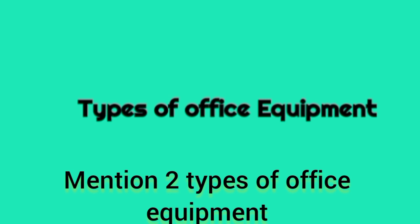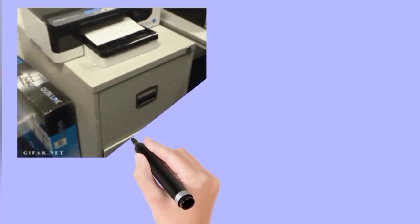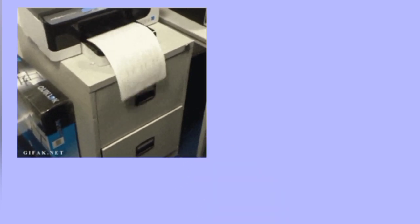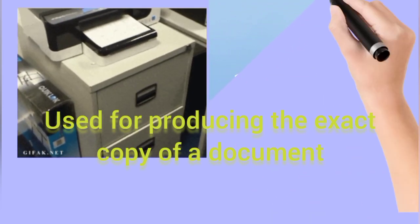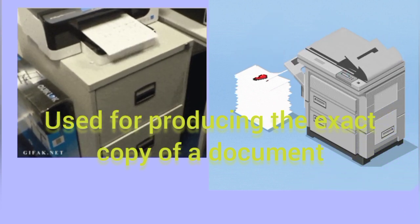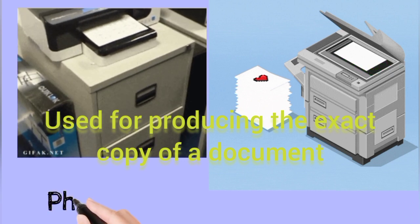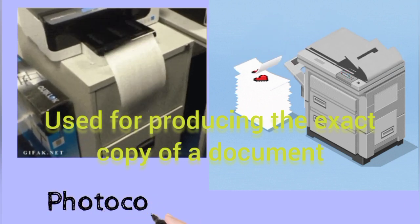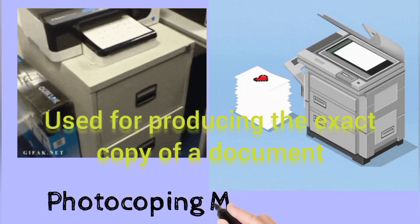We are beginning with the photocopying machine, or photocopier. The photocopying machine is basically used for duplicating another copy. It is used for the production of the exact copy of a document. That is what the photocopying machine or photocopier is used for in the office.